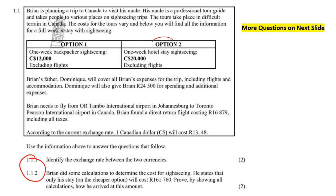Option one is a one-week backpacker stay, and option two is a hotel. Backpackers are usually very cheap — it's where you sleep on bunk beds, but it's fun, you meet a lot of people, and it's much cheaper. Here you can see there's the backpacker option and the hotel option.